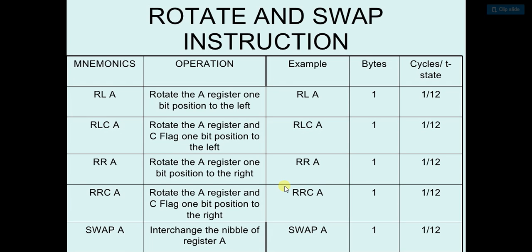So it will just rotate one bit position to the left of the specific register. Now in RLC, what it will do is it will just do the same operation like RL, but with carry flag. So it will also rotate the carry flag one bit position to the left.